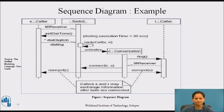Second, there is a focus of control. The focus of control is a tall thin rectangle that shows the period of time during which an object is performing an action either directly or through a subordinate procedure. The top of the rectangle is aligned with the start of the action. The bottom is aligned with its completion and can be marked by a written message.